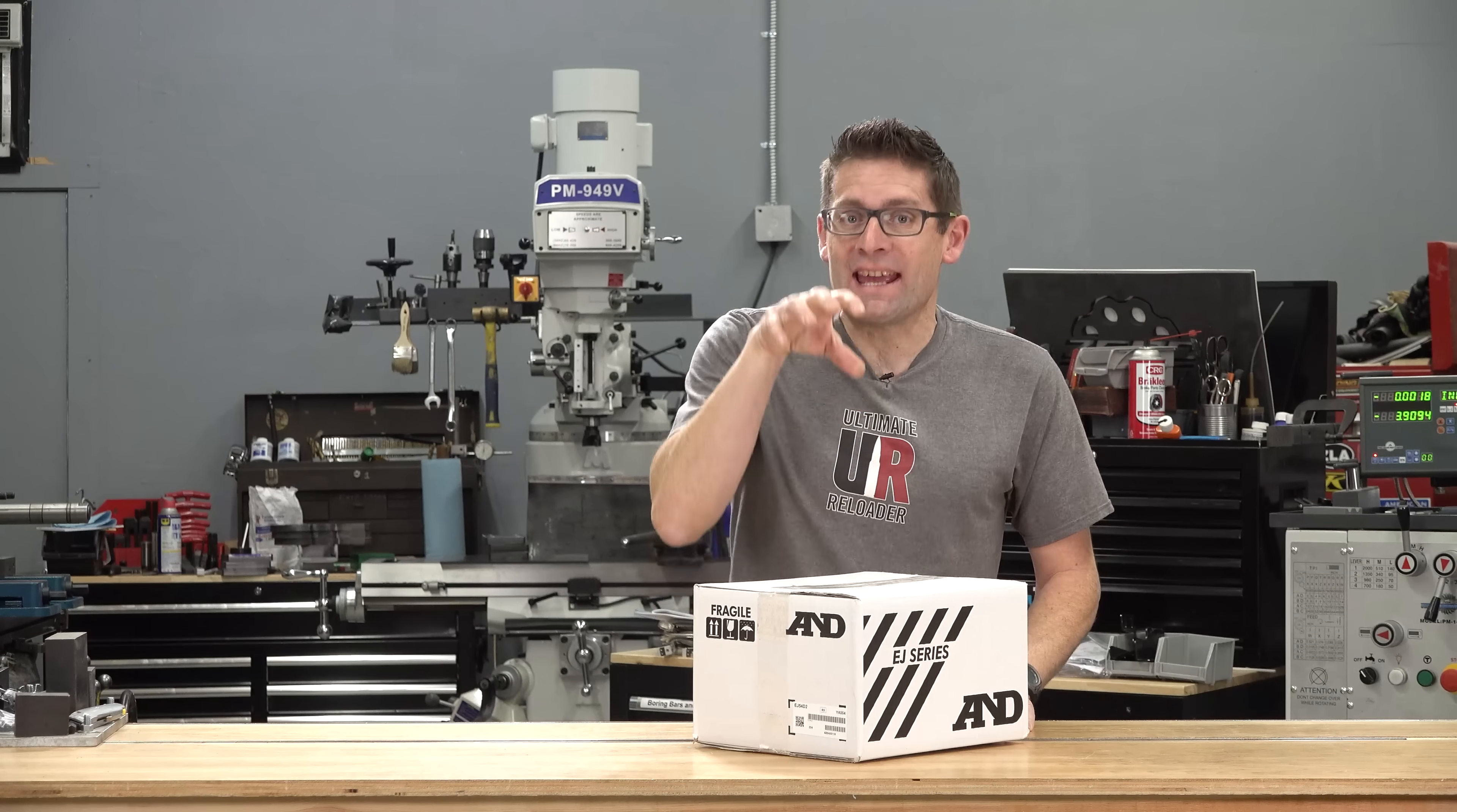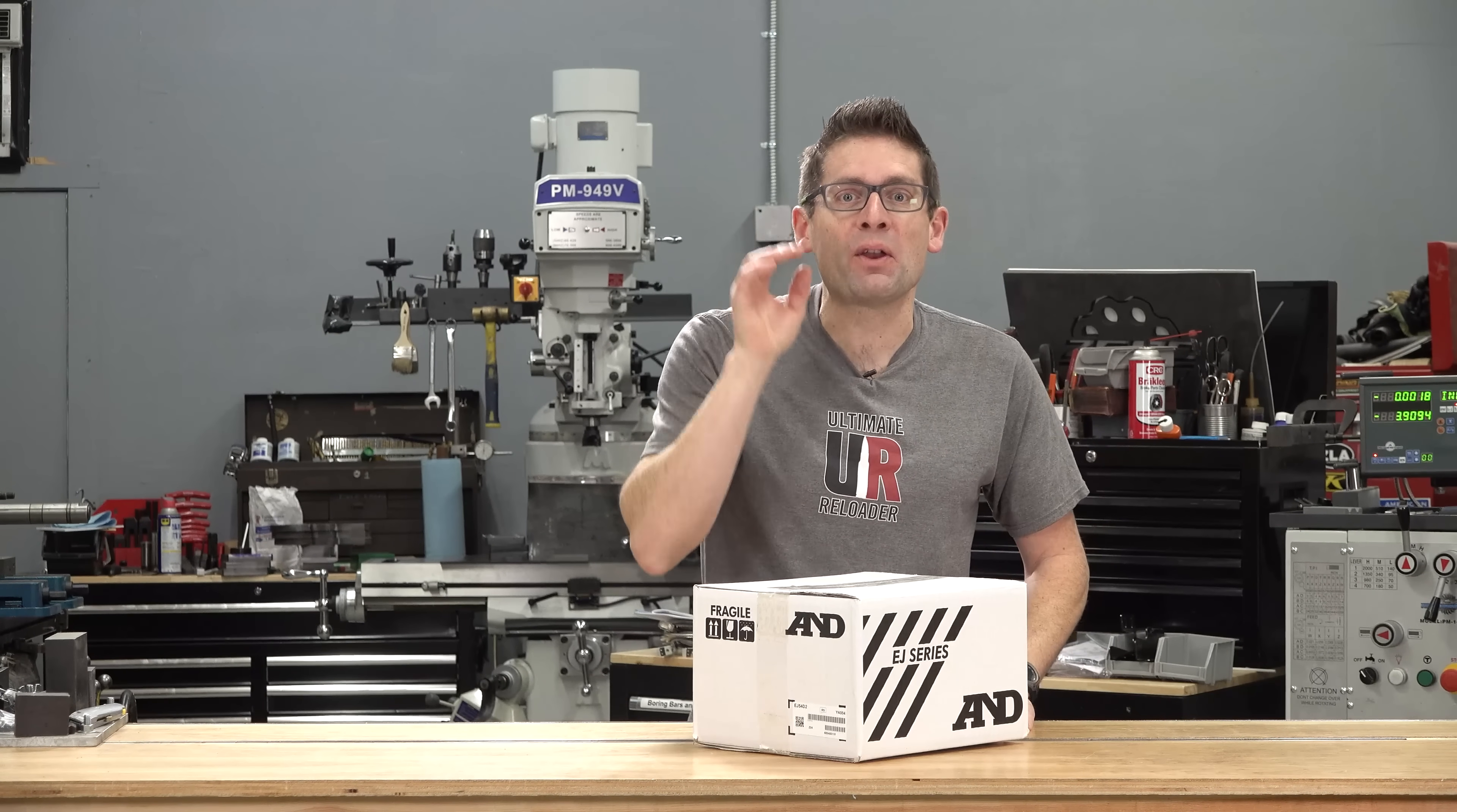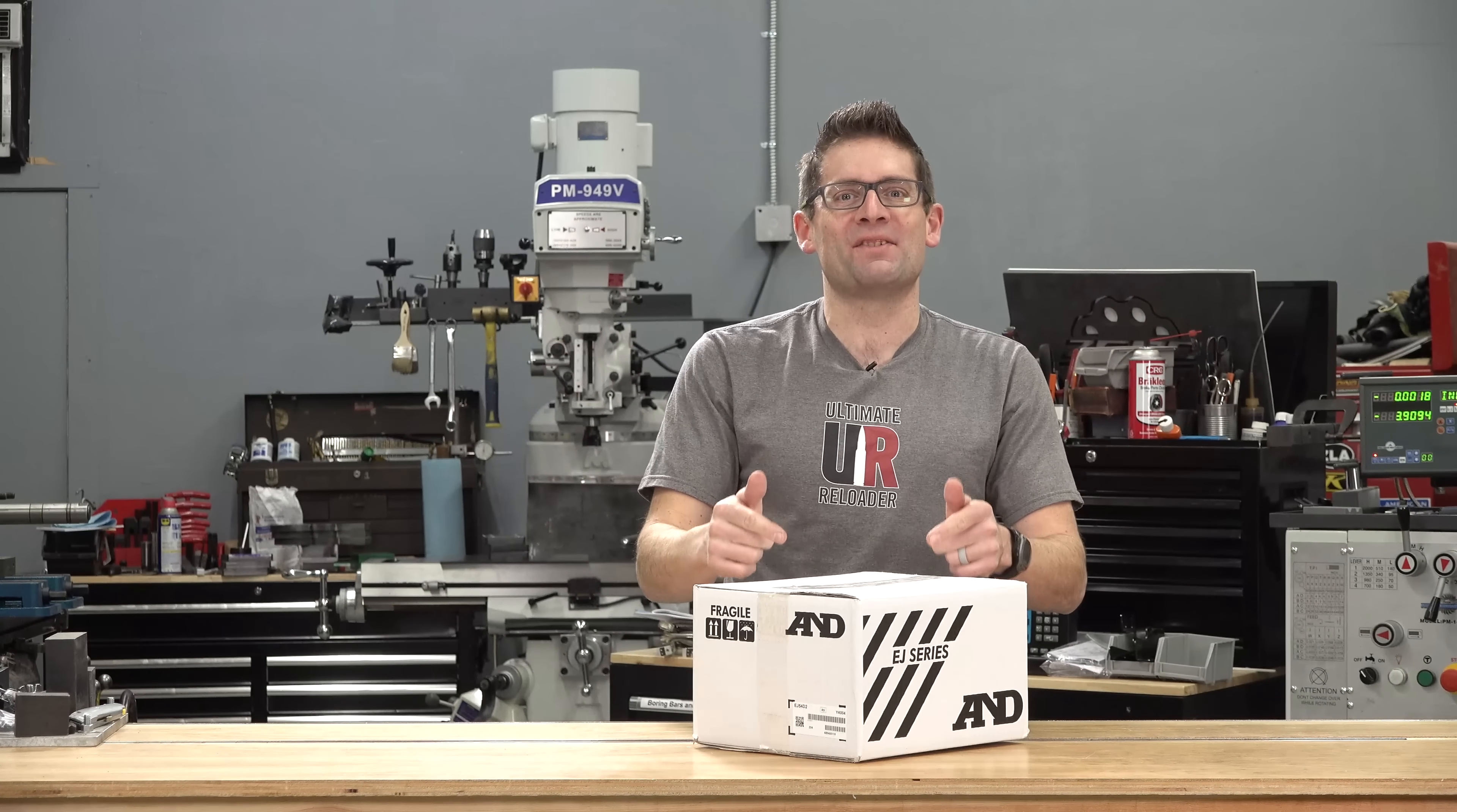This scale from A&D can sense three thousandths of a grain, that's less than one two-millionth of a pound, making it the most accurate scale I've got in the shop. In this video we're going to get hands-on with it.